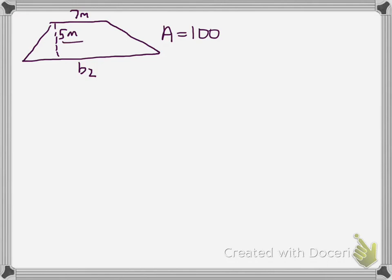We're given that the height is 5 meters. We're given that one of the bases up here is 7 meters. The other base, base 2, down here, we don't know what base 2 is yet. And we also know that the area is 100.